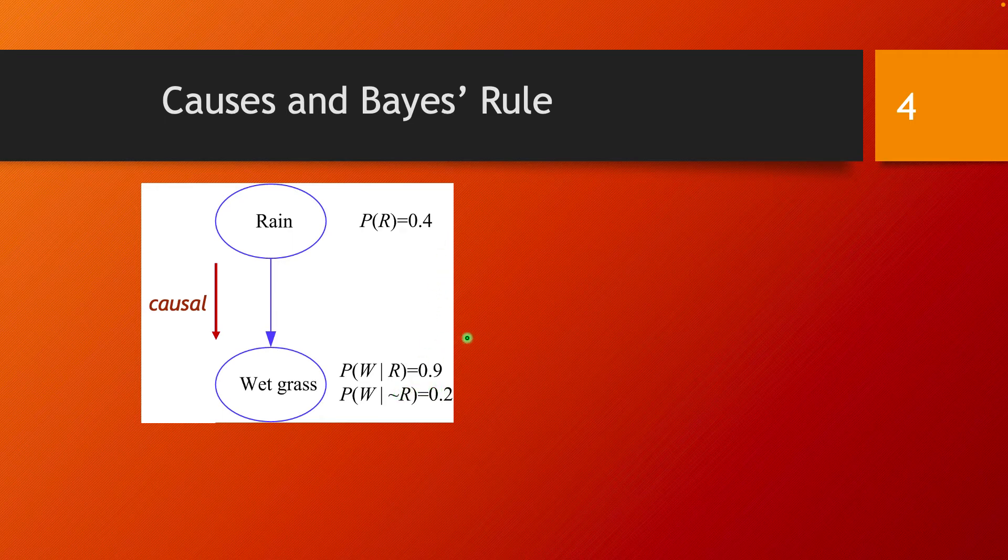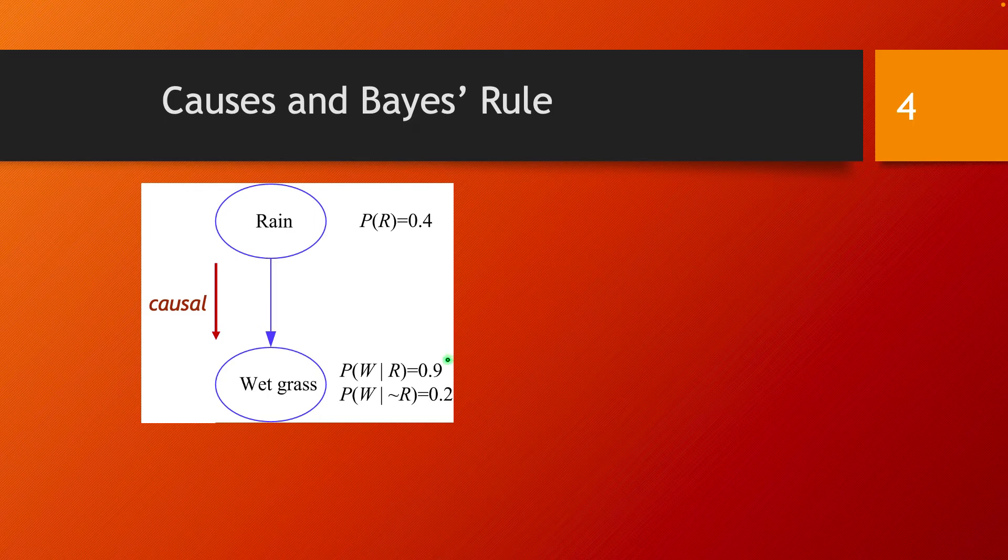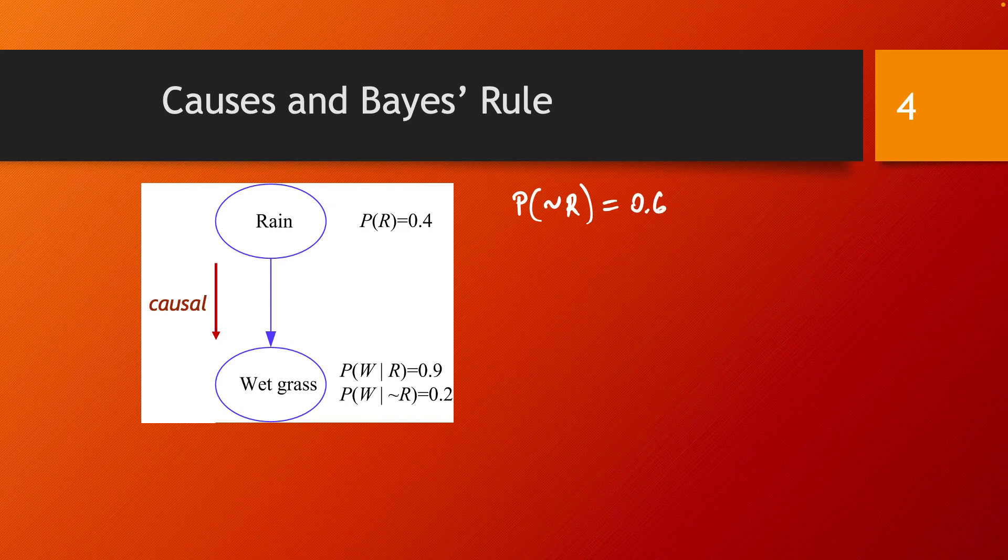Now these probabilities we have, they specify the model completely. Having these, we are also getting the probability of a non-rainy day, and that's going to be obviously 0.6, because the probability of a rainy day was said to be 0.4.